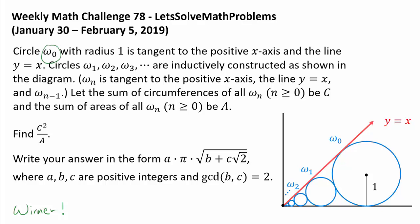Circle ω₀ with radius 1 is tangent to the positive x-axis and the line y equals x. And we see ω₀ right here.